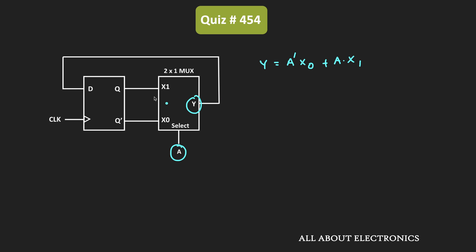As you know, x1 is connected to the Q output, while x0 is connected to the Q' output. So we can further write this expression as A'·Q' plus A·Q.